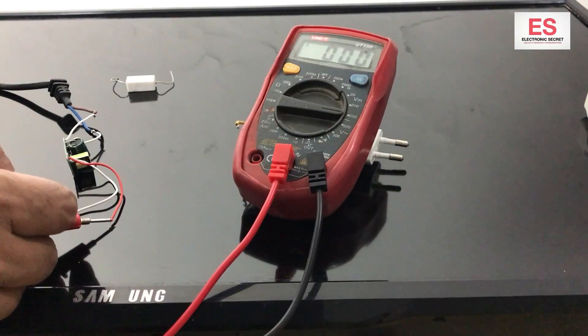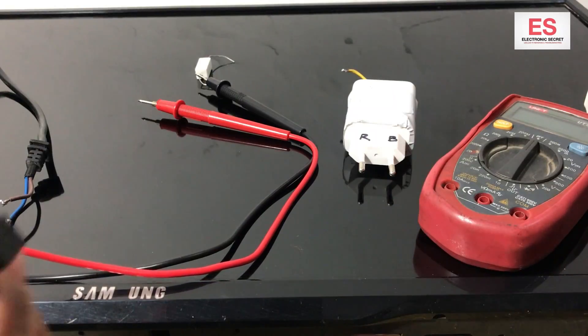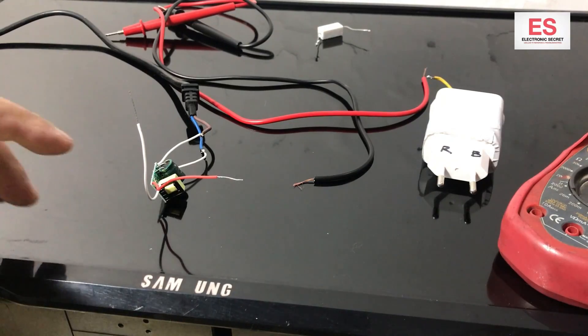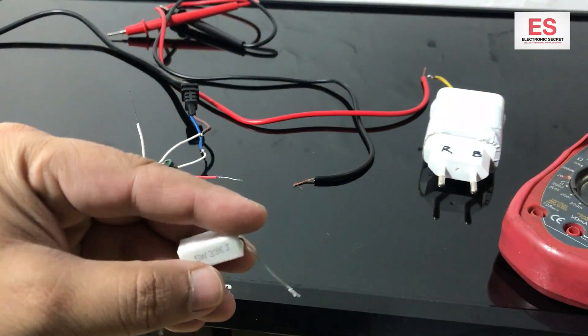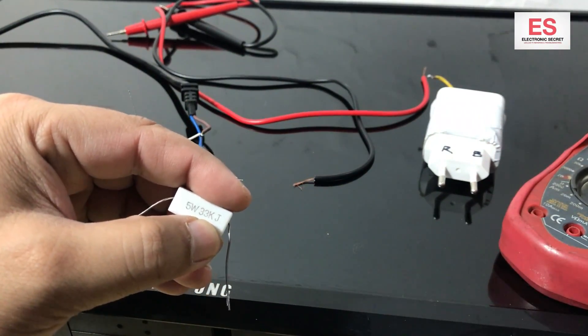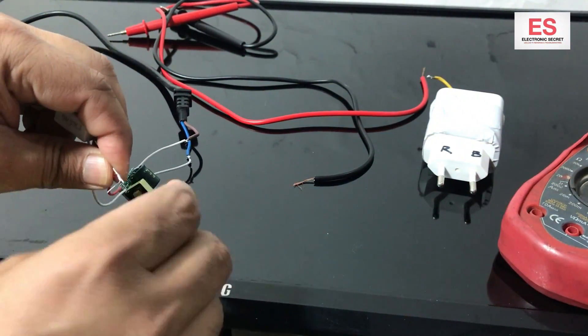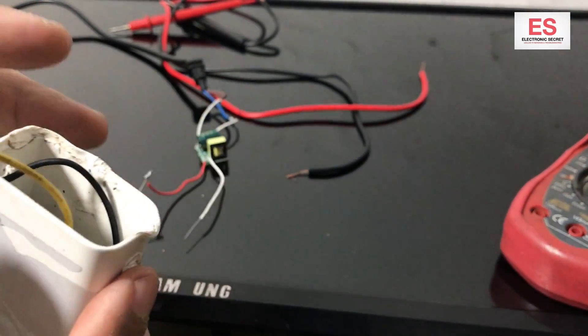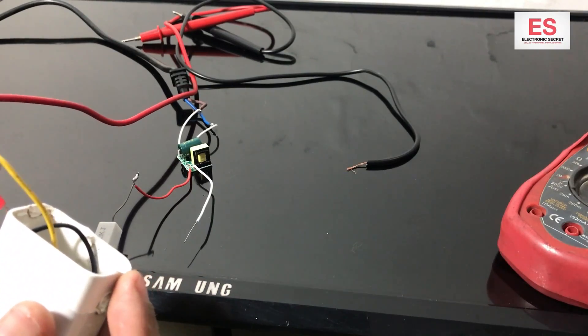You can see that it is showing 33 volt DC. Take two probes and cut them. Solder here, after this 5 watt 33 kilohm resistor. You will solder the red wire and red probe because it is a positive side.